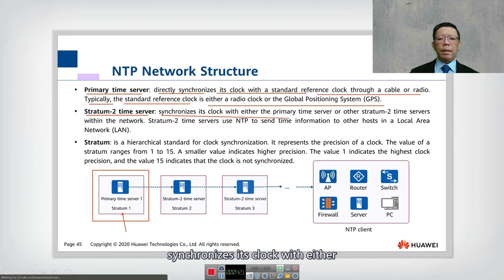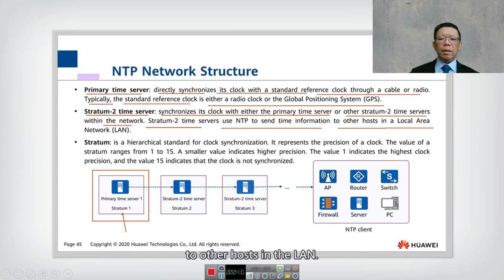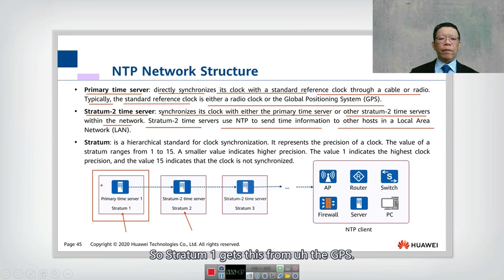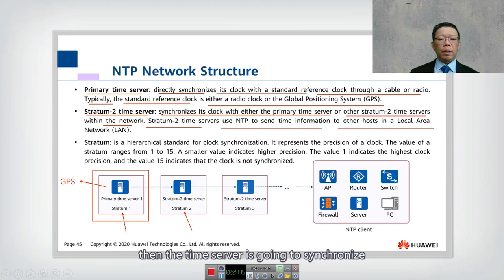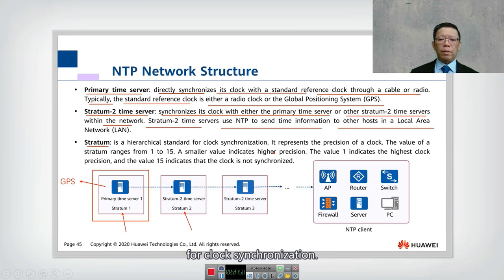A stratum-2 time server synchronizes its clock with either the primary time server or other stratum-2 servers within the network. Stratum-2 time servers use NTP to send time information to other hosts in the LAN. So stratum-1 gets its time from GPS, and then a stratum-2 server synchronizes with stratum-1, or it can also get from multiple stratum-1 sources.